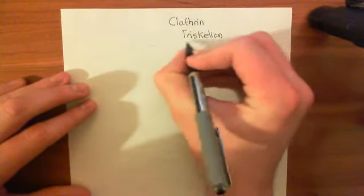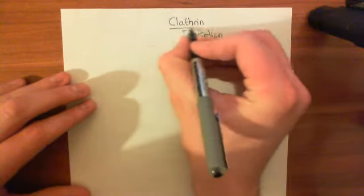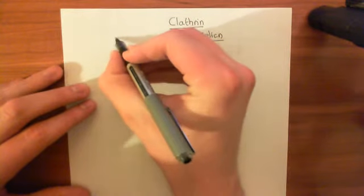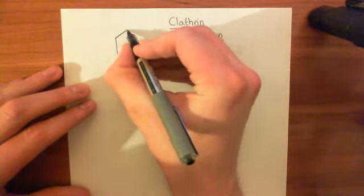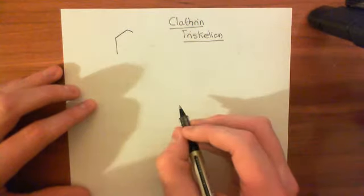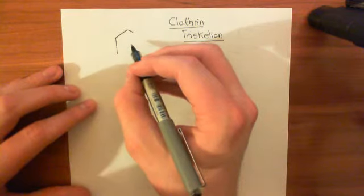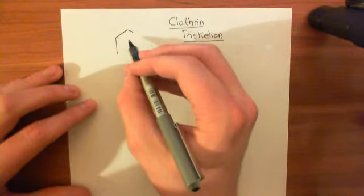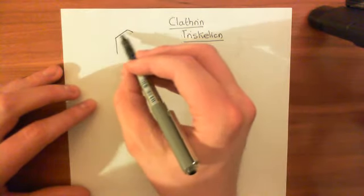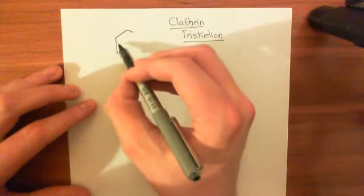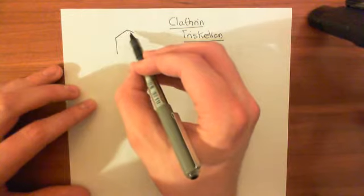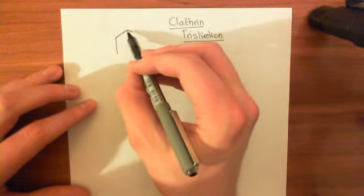Clathrin triskelions are basically trimers of clathrin. If we draw one clathrin molecule, here's the thigh portion — the proximal domain. Here's the distal domain, the leg. And here's our foot coming back like that. So it's like a leg where you're flexing the leg relative to the thigh, and then plantar flexing the foot, stretching it as far away from the leg as you can get it.